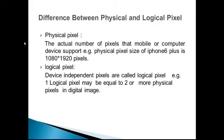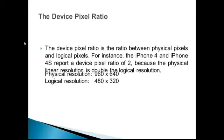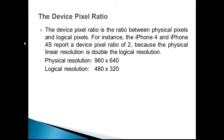Device independent pixels are called logical pixels. For example, one logical pixel may be equal to two or more physical pixels in a digital image. The device pixel ratio is the ratio between physical pixels and logical pixels.